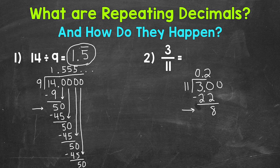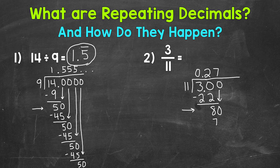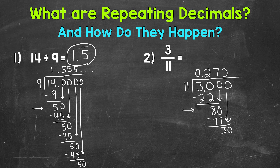Let's put another zero that we can bring down. Now we have 80 divided by 11. How many whole groups of 11 out of 80? Well, 7. That gets us to 77. 7 times 11 is 77. Subtract, we get 3. Let's use another zero — bring that down. So we have 30 divided by 11. How many whole groups of 11 out of 30? Well, 2. 2 times 11 is 22. Subtract, we get 8.